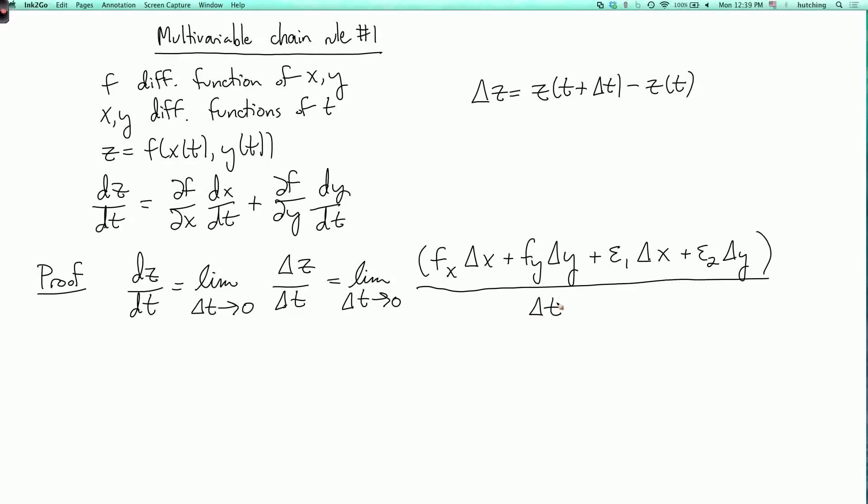Part of the definition of differentiability is that these epsilon 1 and epsilon 2 limit to zero. And then we can break up this limit as a sum of four things. These last two are going to go to zero. So all we're going to get is the limit as delta t goes to zero of fx delta x over delta t plus limit as delta t goes to zero fy delta y over delta t.